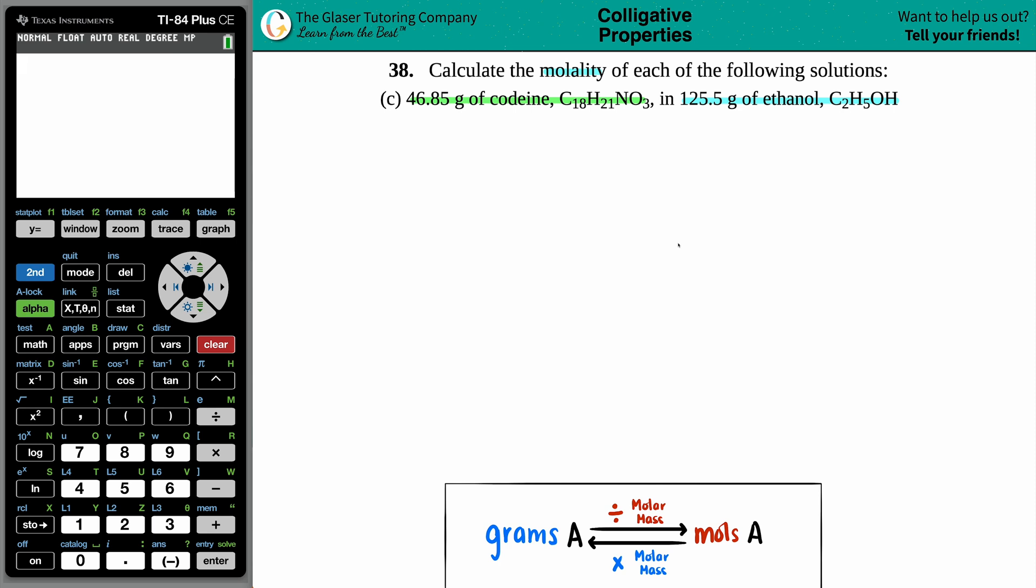Anyway, we just have to find the molality of this. So we have 46.85 grams of codeine in an amount of ethanol. What is the molality?